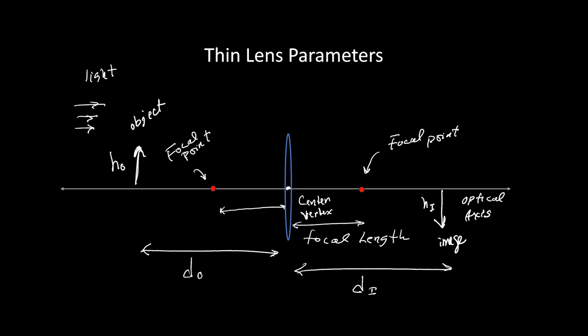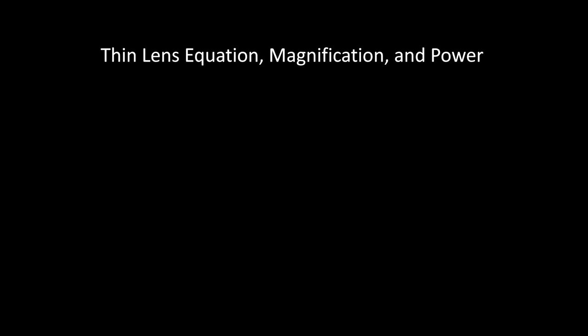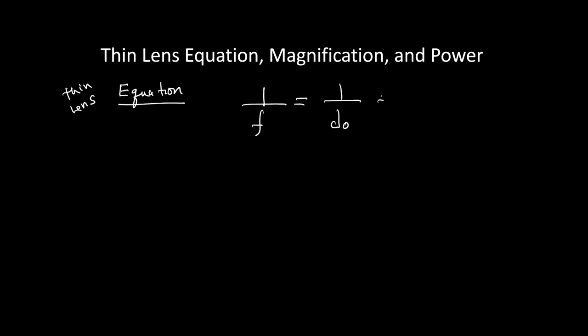These are the parameters we use for a lens. The focal length is denoted by F. So the symbols are: H sub I, F, D sub I, D sub O, and H sub O. These come into play in the lens equation. The thin lens equation is: 1 over the focal length equals 1 over the distance to the object plus 1 over the distance to the image.